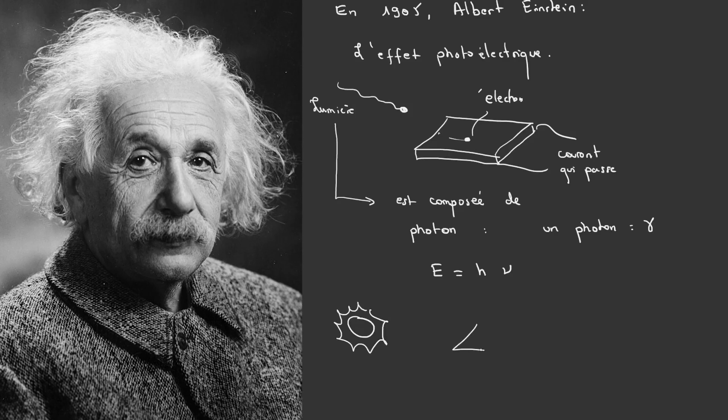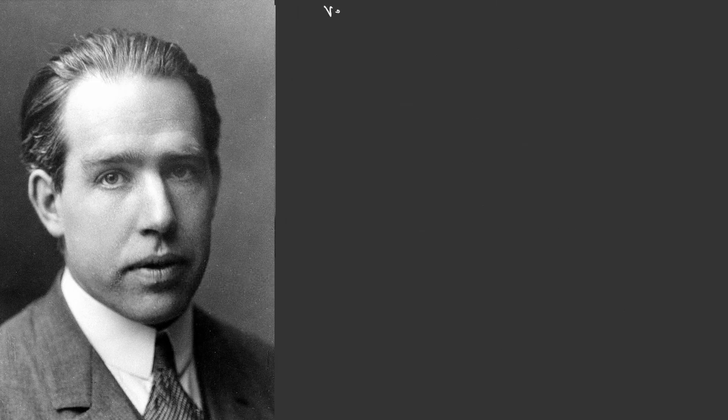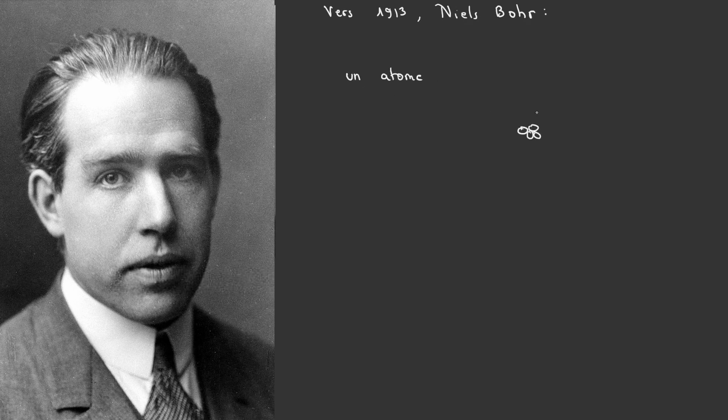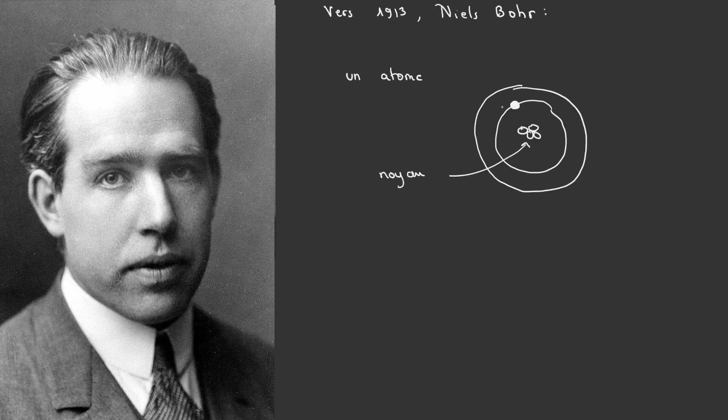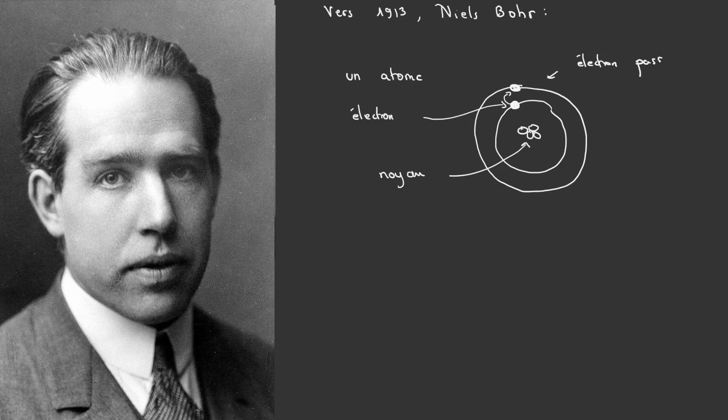Around 1913, Niels Bohr proposed a quantum model of the atom to solve another major problem. According to classical physics, an electron orbiting a nucleus should lose energy through radiation and eventually crash into the nucleus, making matter unstable. Bohr postulates that electrons can only occupy quantized orbits, corresponding to discrete energy levels.